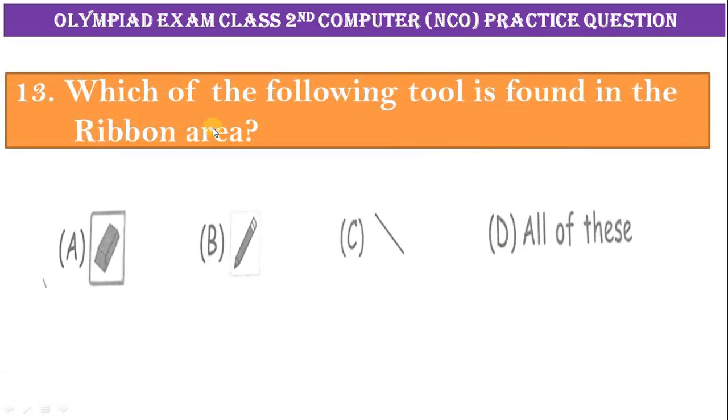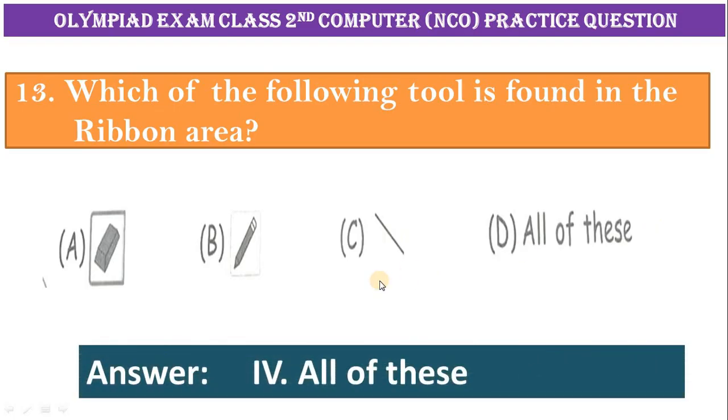Number thirteen: which of the following tools is found in the ribbon area? A, eraser. B, pencil. C, lines. D, all of these. Correct answer is option four, all of these.